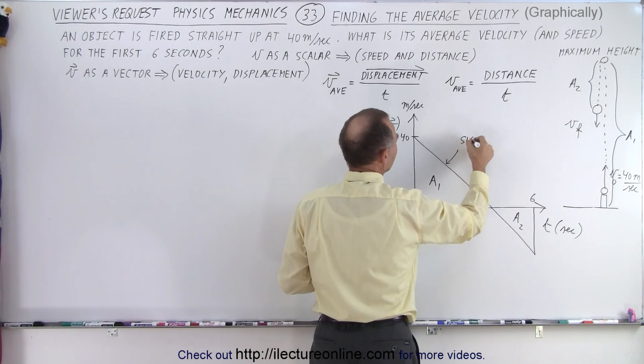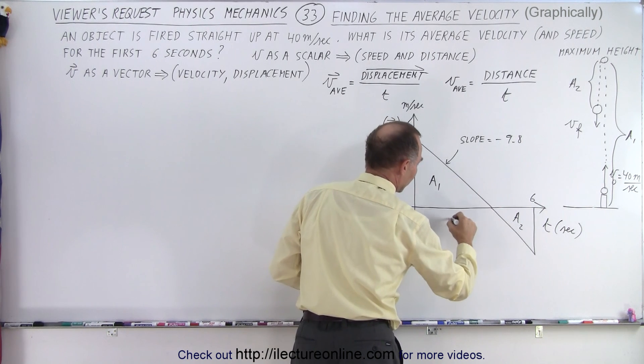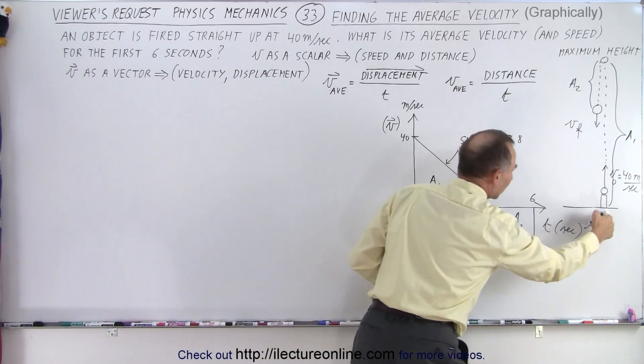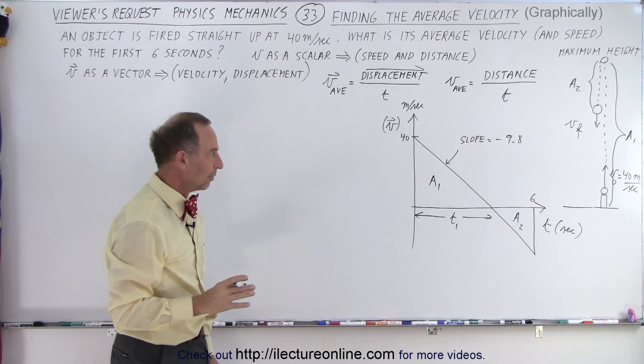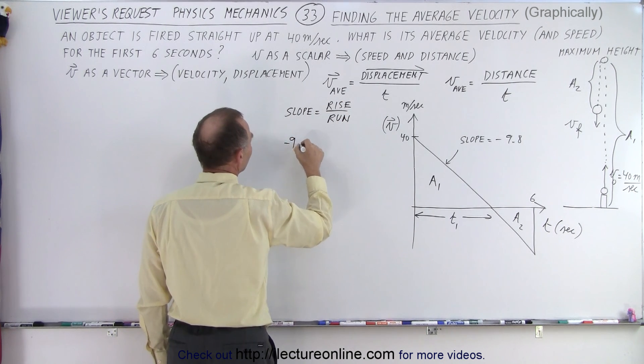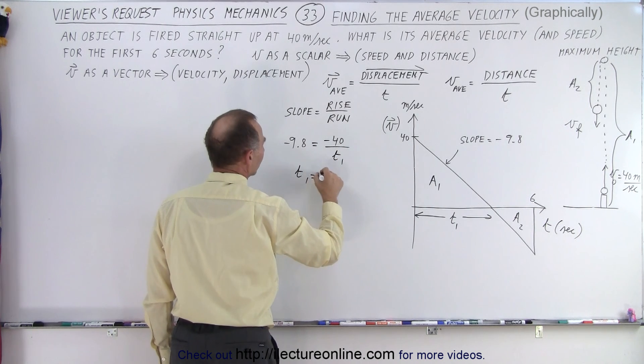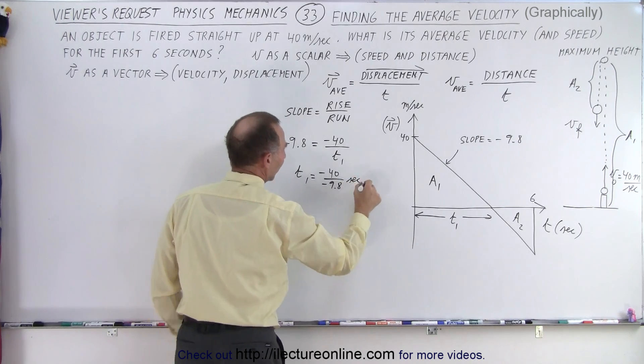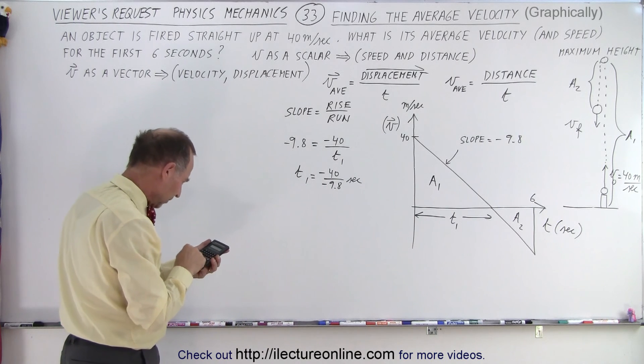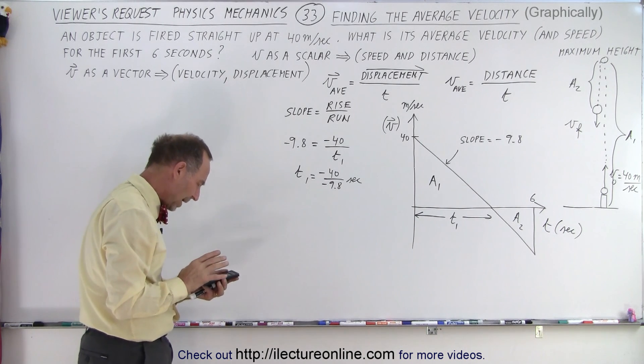We know what the slope is equal to. The slope is equal to minus 9.8. That allows us to calculate this time, time 1, which is the time from start until it reaches the maximum height. By definition, the slope is equal to the rise over the run. So in this case, the slope, which is minus 9.8, is equal to the rise, which is a negative 40, divided by the run, which is T1. So T1 equals negative 40 divided by minus 9.8. With the calculator, 40 divided by 9.8 equals 4.0816 seconds.